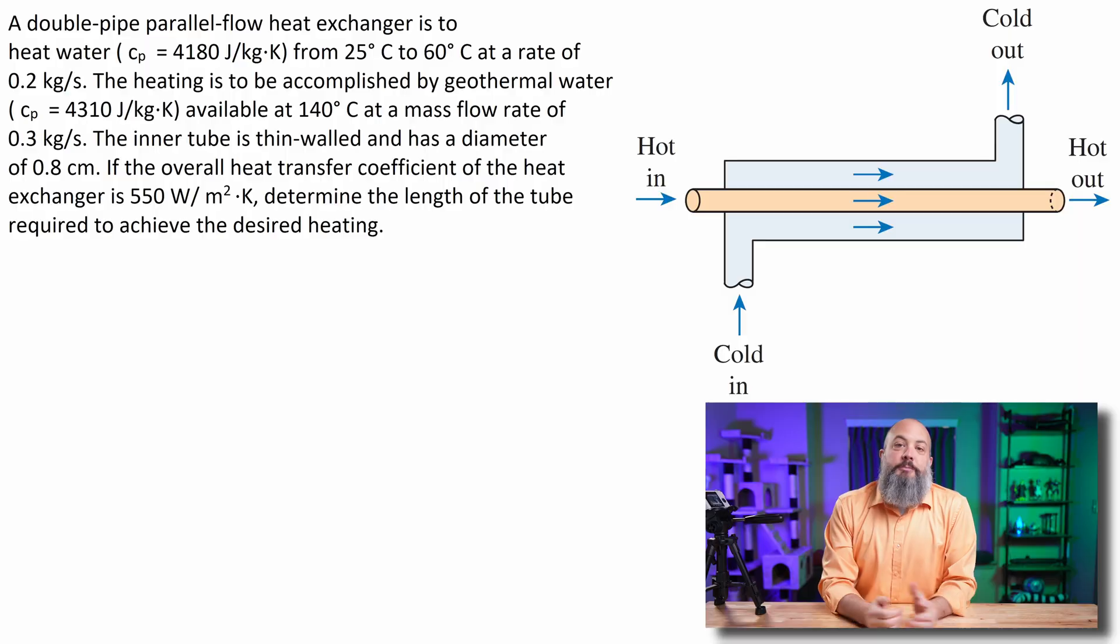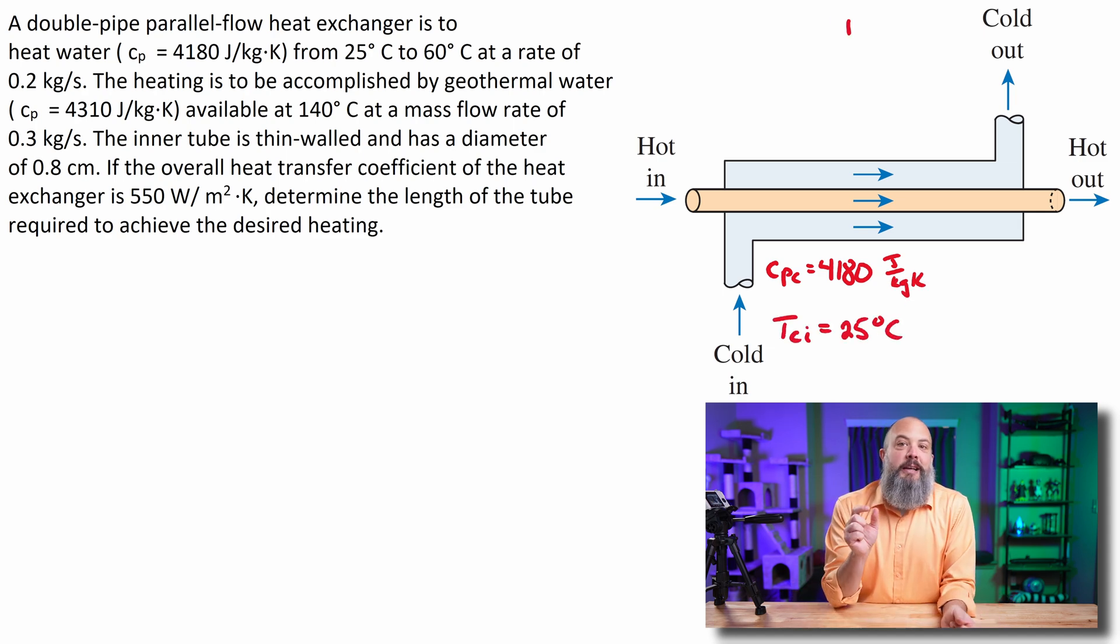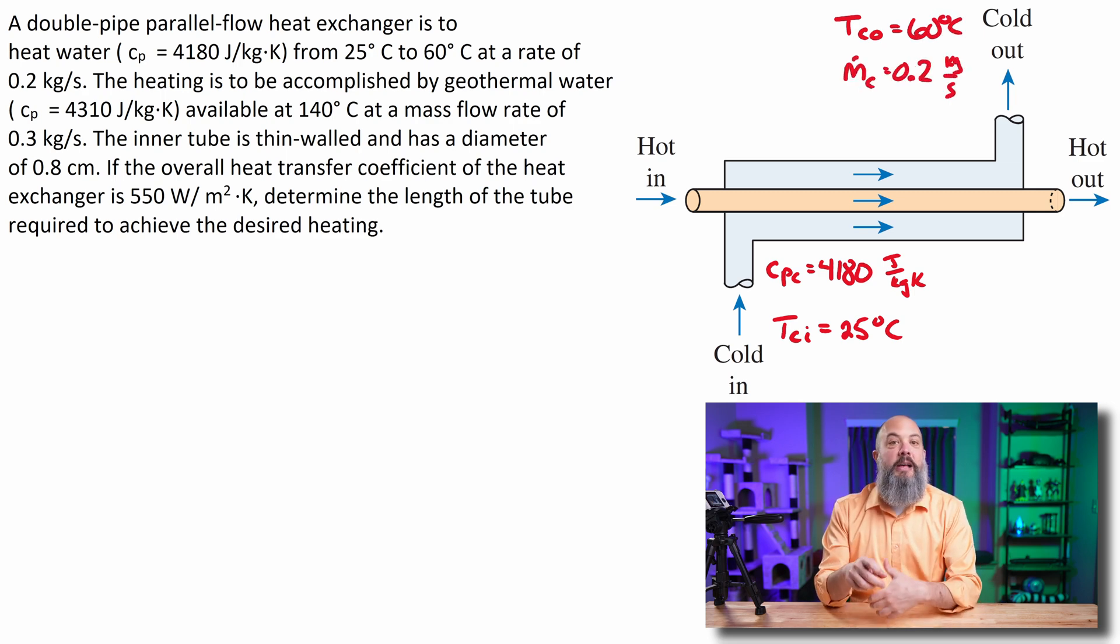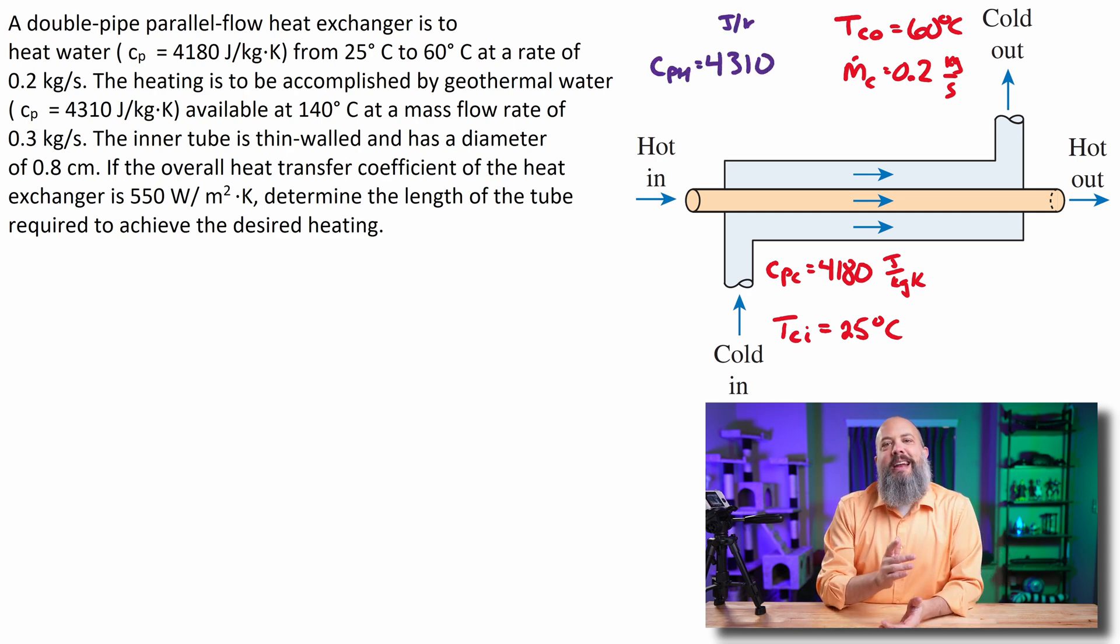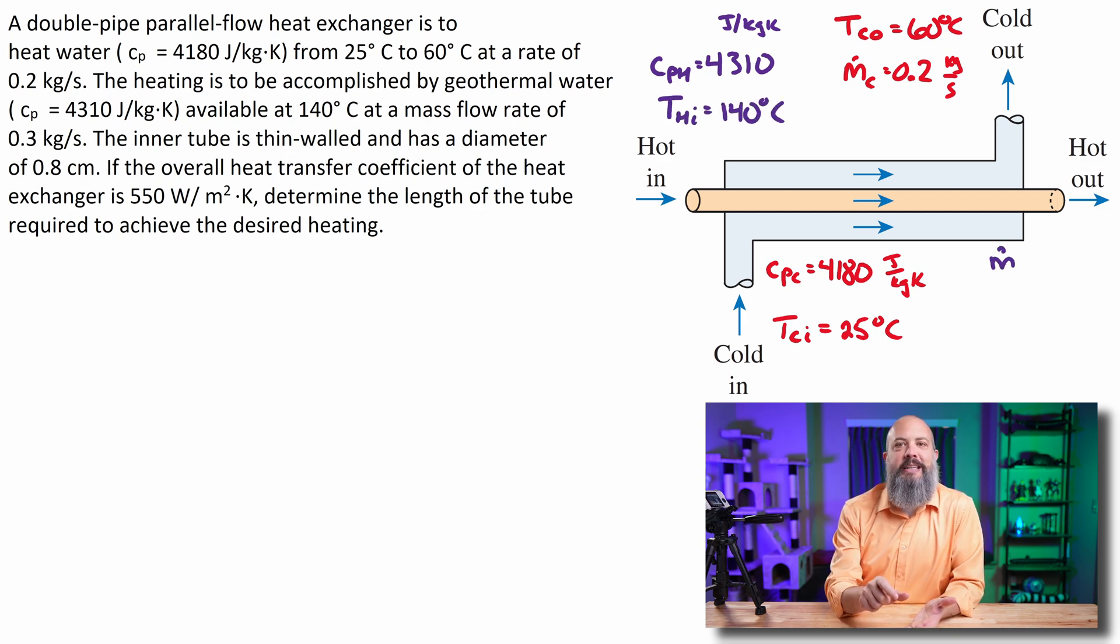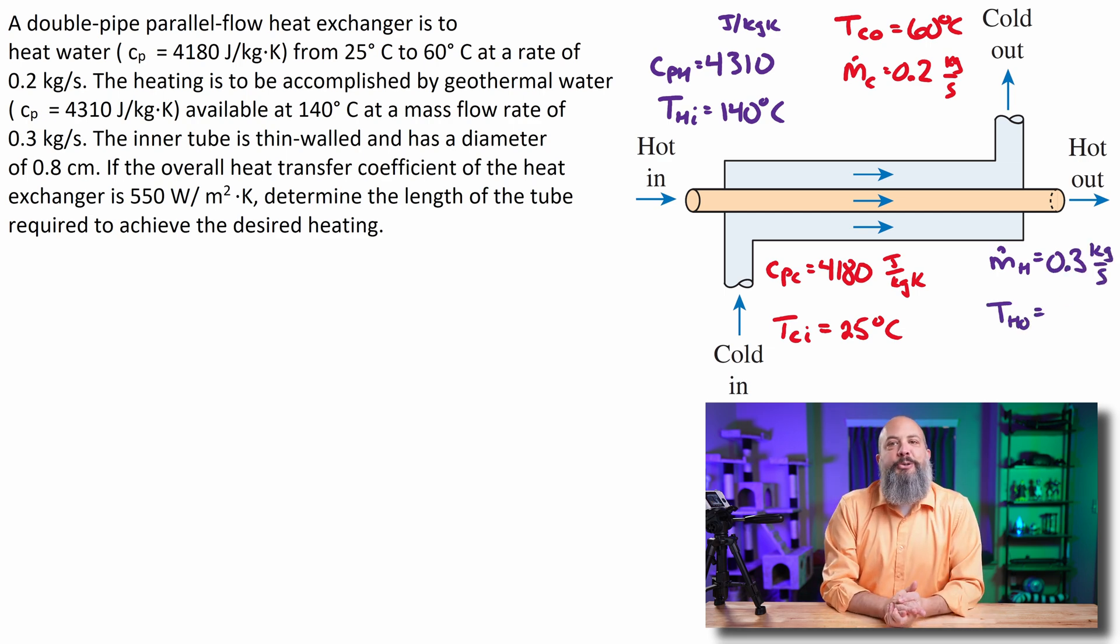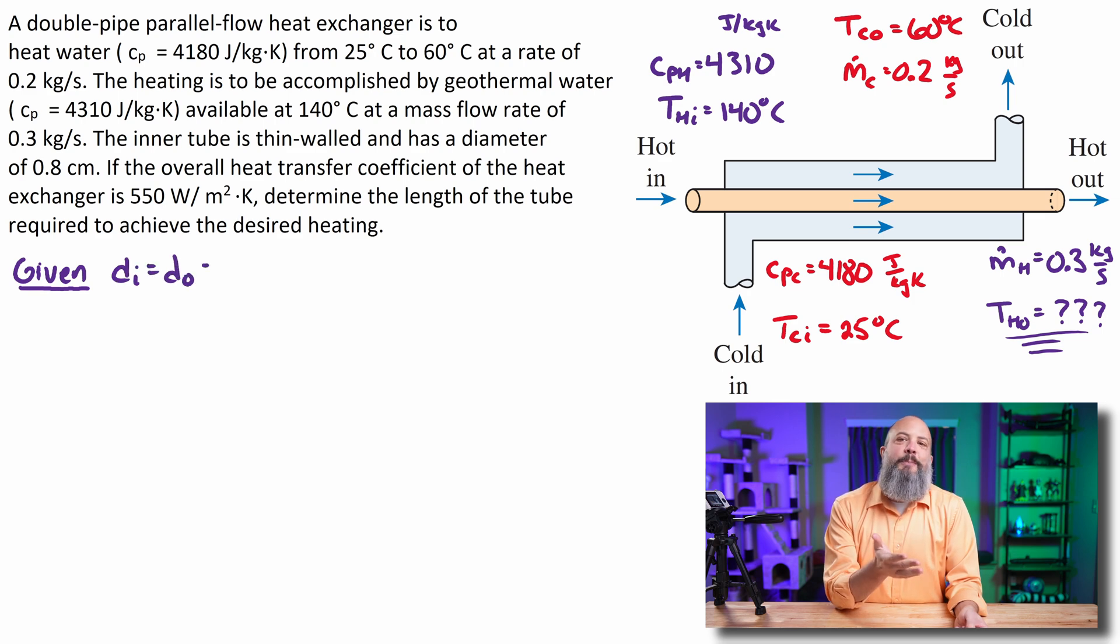Starting off this example problem by labeling all of my givens on my drawing. I've got both inlet temperatures, 140 degrees and 25 degrees. I have CP, the specific heat for both streams. And I have one outlet temperature. I want my cold fluid to raise from 25 degrees at the inlet to 60 degrees at the outlet. And I have a mass flow rate for that also of 0.2 kilograms per second. For the hot fluid, I have its mass flow rate, but I don't know what the outlet temperature is going to be.